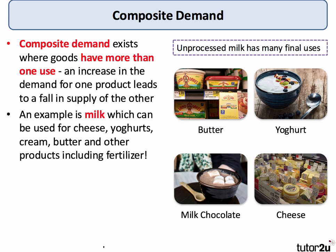A really good example is milk, which can be used clearly for milk, but also for cheese, yogurts, butter, milk chocolate products, and also indeed for fertilizer.